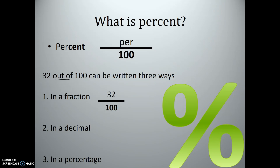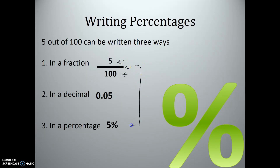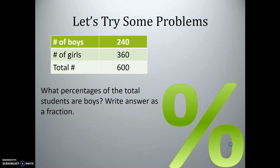We could write it as a fraction, as a decimal — 32 hundredths — or as a percentage: 32%. Let's look at 5 out of 100. We could write it as a fraction, 5 over 100, as a decimal, five hundredths, or as a percentage, 5%. So percentages are just special fractions.